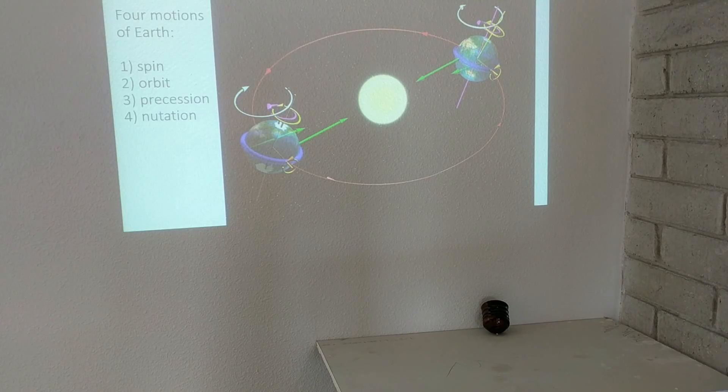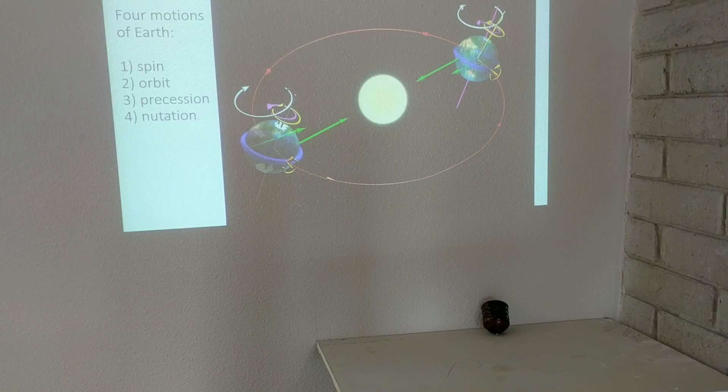The third motion is the precession, which takes about 26,000 years for that slow wobble of the Earth as it spins very rapidly.